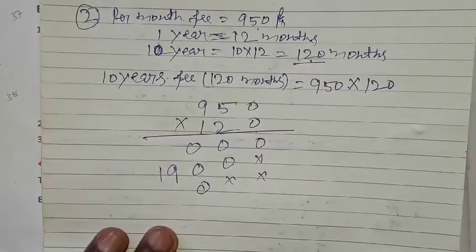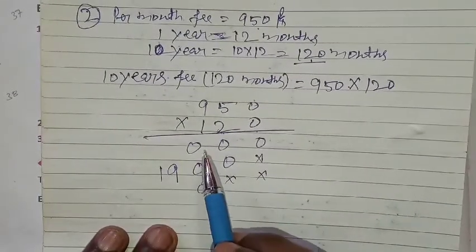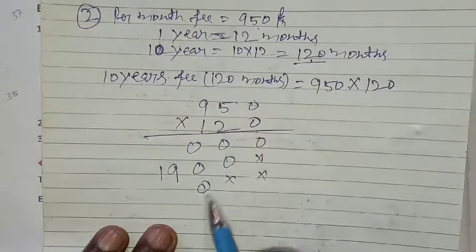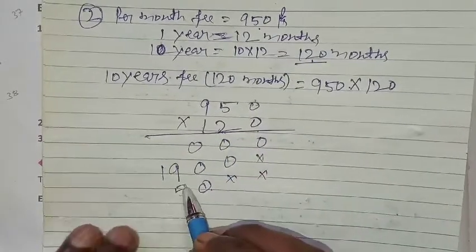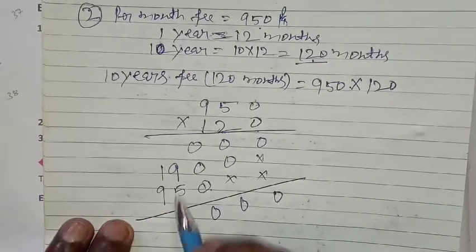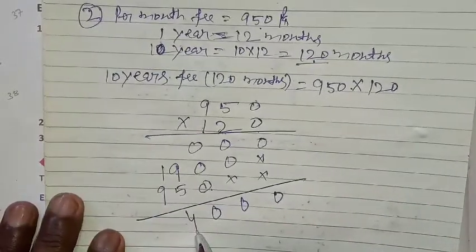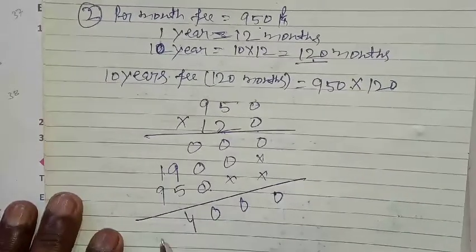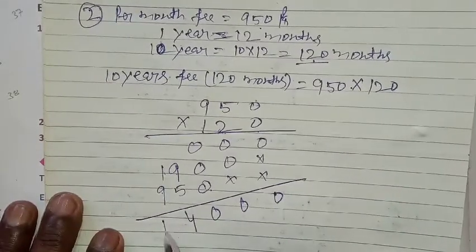1, 0, 0 is done. 1, 5, 5. 1, 9, 9, 0, 0, 0. 9, 10, 14, 4. 9 and 1, 10. And carry 1, why will it become 11?